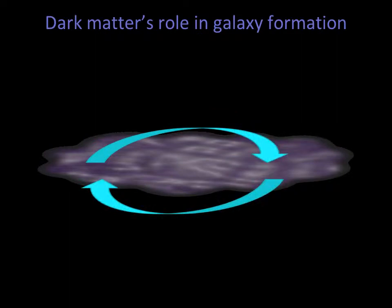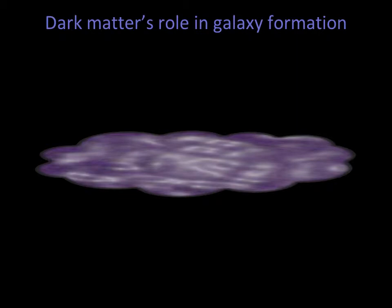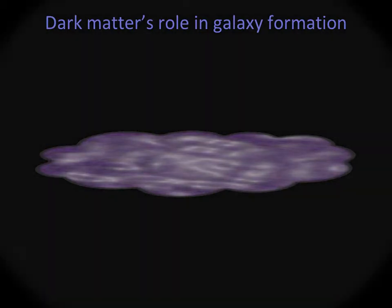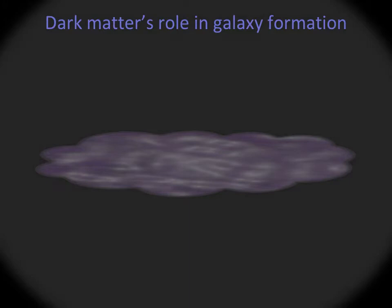Dark matter therefore stays in place and will not collapse into a disk like the rest of the material. This model tells us that the luminous matter in each galaxy — the disk and the globular clusters — must still be nestled inside the larger spherical halo of dark matter. Observations of the motions of stars within our own Milky Way and other galaxies support this idea.